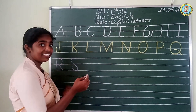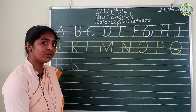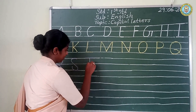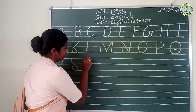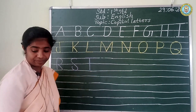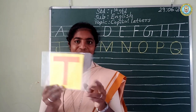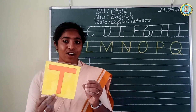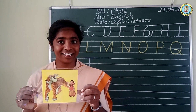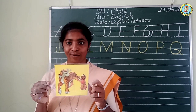Which is the next letter, children? It is T. Yes, you all know it. The sleeping line and the straight line. T. T for tiger. T for tiger. Have you all seen a tiger? Yes, you all have seen a tiger in the zoo and the forest.